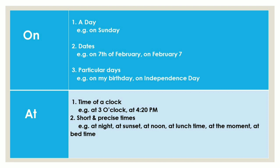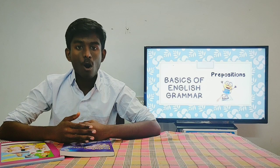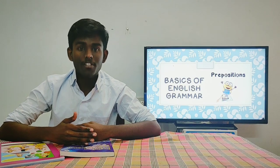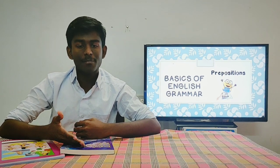The second preposition of time is 'on.' For mentioning days, we use 'on' before them — for example, 'on Sunday,' 'on Tuesday,' 'on Thursday.' On every Sunday, we have a holiday, but on Monday, we have to go to school. On Friday, my father and I plan to go for a trip. We can also use 'on' for mentioning dates and particular days — for example, 'on the 7th of February, we may have a holiday.' On September 5th, we all celebrate Teacher's Day.